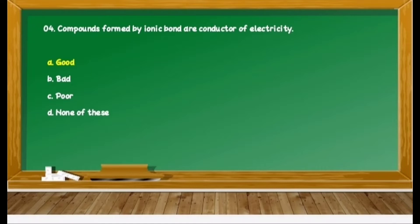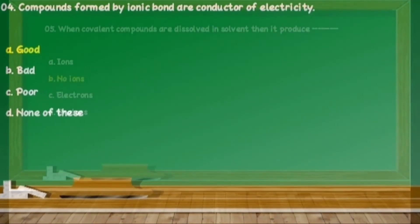Question 24: We know that the ionic bond is present in electrovalent compounds, and due to such a kind of property they are able to conduct electricity. Therefore, the compound formed by ionic bond is a good conductor of electricity. So the correct answer of this question is option A, good conductor.